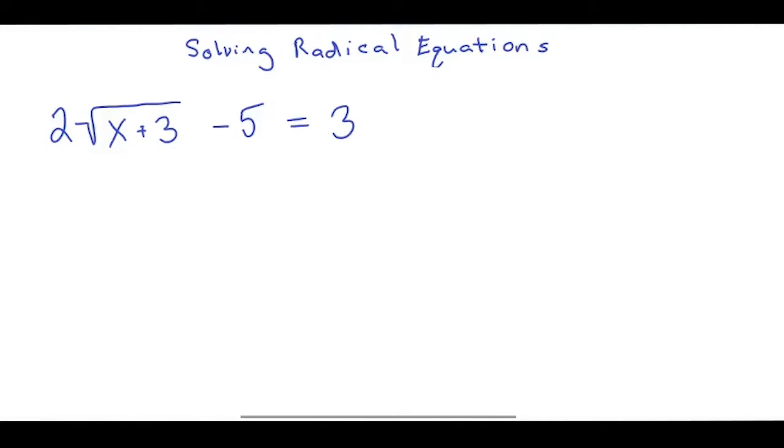So the way we solve this is first I'm going to add the 5 on both sides. So that's going to cancel this here and we are left with 8 right here and 2 times the square root of x plus 3.